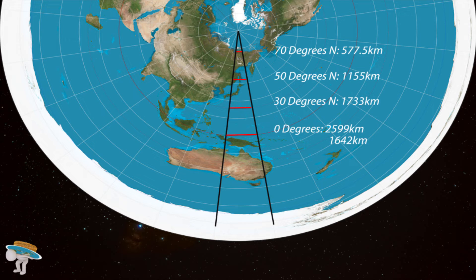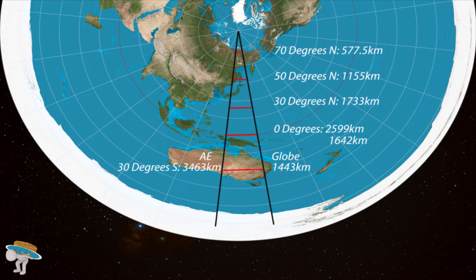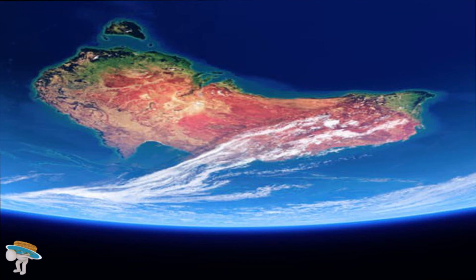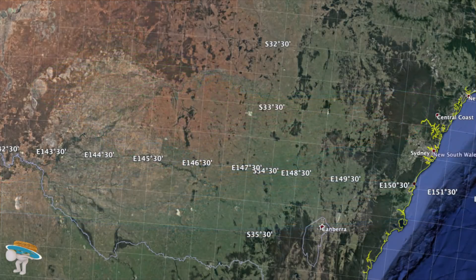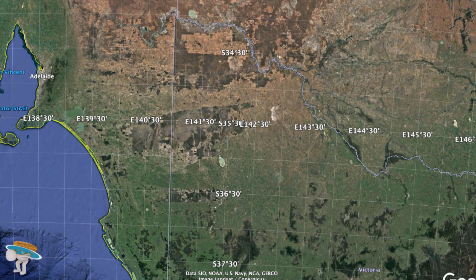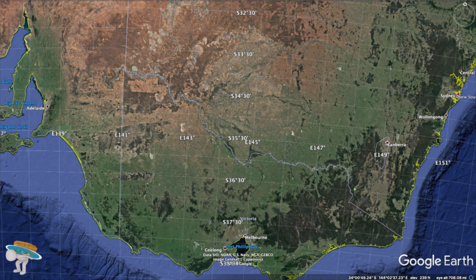The problem gets even worse as we go past the equator. The AE map forces this 15-degree segment to continue growing almost exponentially: at 30 degrees south we have a 2,000 km gain; at 50 degrees south, a 3,000 km gain; and at 70 degrees south, over a 4,000 km gain. Much of this land is out to sea or in the fictitious land of Antarctica. Let's take a look at Australia — Sydney and Adelaide. On a globe the direct line distance between Sydney and Adelaide is about 1,157 km. On the AE map this places the straight-line distance at over 3,000 km — a gain of more than 1,900 km.